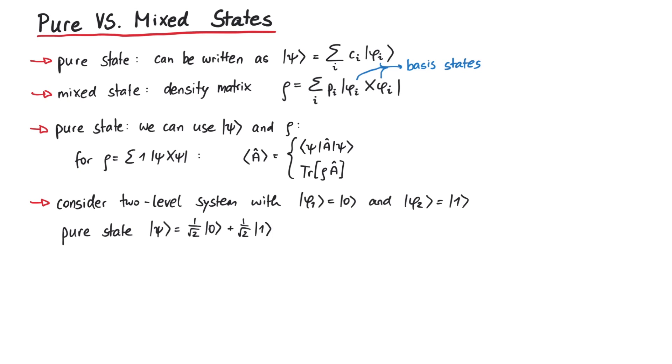It looks like this state is 50% in the state 0 and 50% in the state 1, but this is not actually the case, since we can also have interference between those two states. We could also use a density matrix to describe this state, which would look like this.